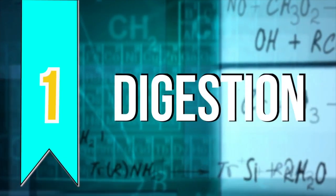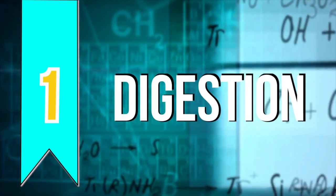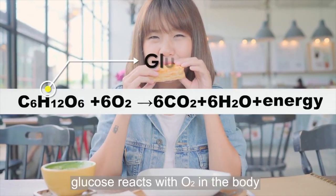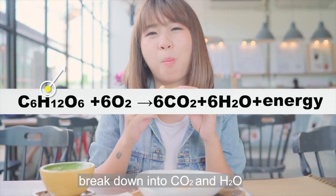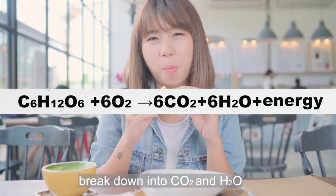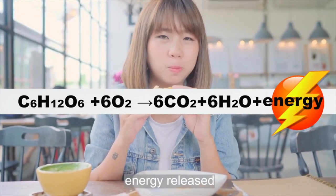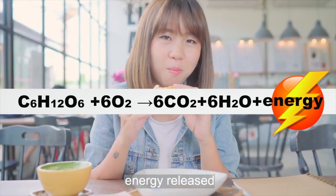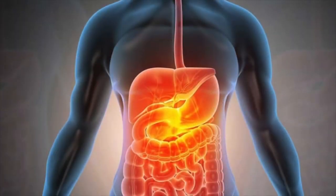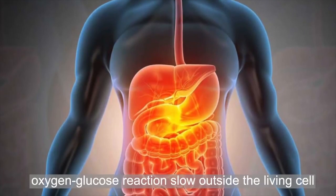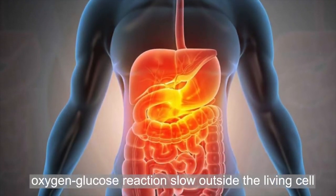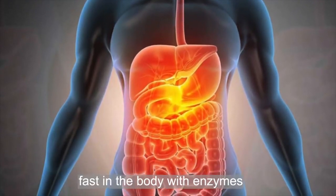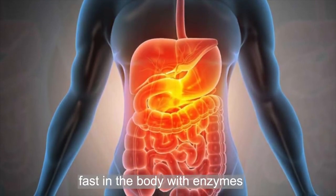Number one: digestion. Food molecules such as glucose react with oxygen in the body and break down into carbon dioxide and water. Energy is released in this process, which keeps us alive and helps us grow. This oxygen-glucose reaction is slow at ambient temperatures outside the living cell, but it happens fast in the body with the help of enzymes.